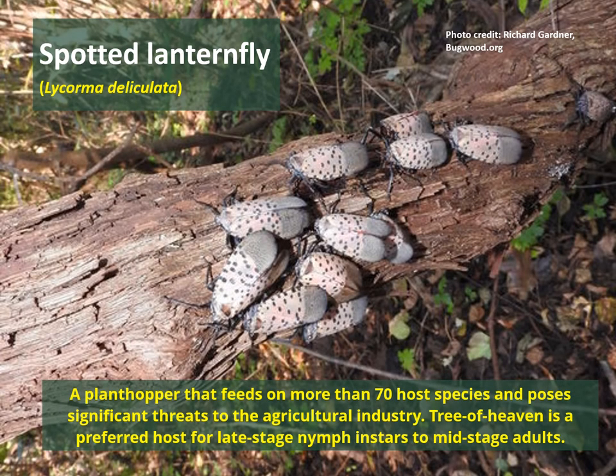Another insect species we're concerned about is spotted lanternfly. This one is not yet present in the Adirondack Park, but we are concerned about it because it has over 70 host species, many of which are our agricultural crops. It's also a concern because its preferred native host is a different invasive plant called Tree of Heaven, and this plant is present in the Adirondacks.